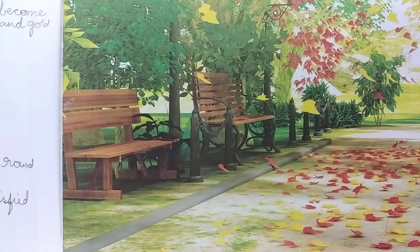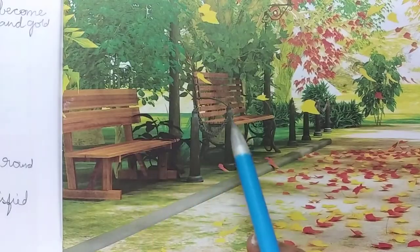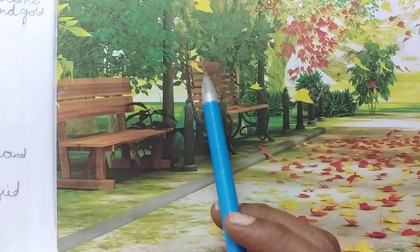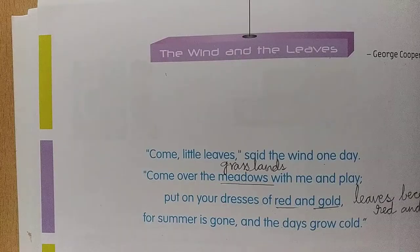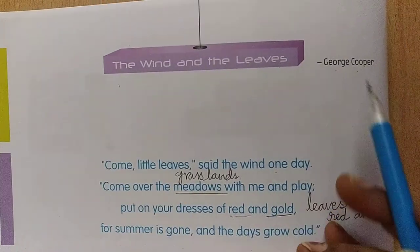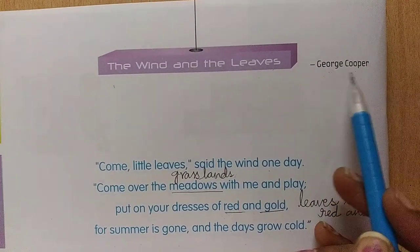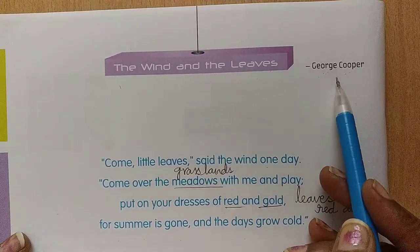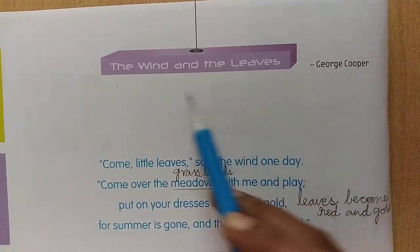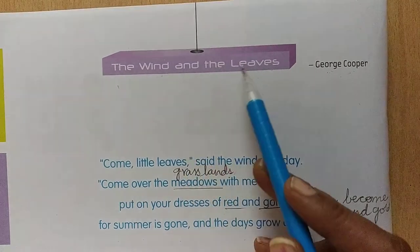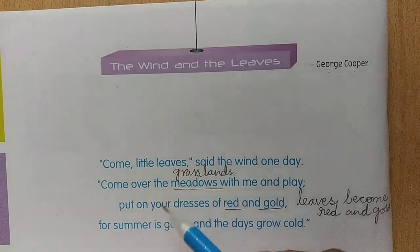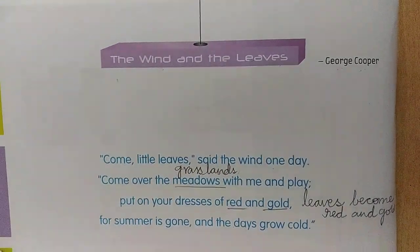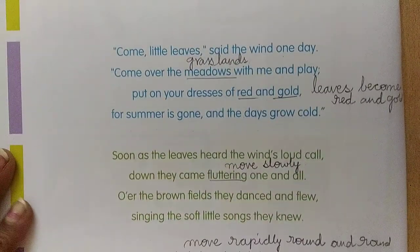And the poet, George Cooper — he wrote a poem. He is the poet. He wrote about the relation between the wind and the leaves. Let me read the poem and tell you the relation, children.